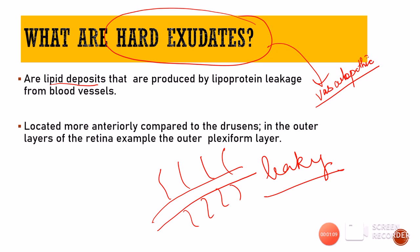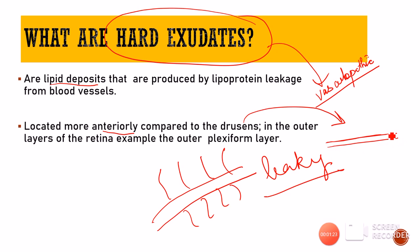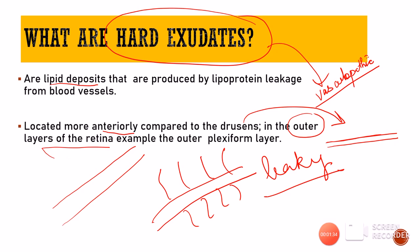Hard exudates are located more anteriorly when compared to drusen. As I mentioned in my previous video, drusen are actually located below the RPE, in between the RPE and Bruch's membrane. However, hard exudates are intra-retinal — they are located within the layers of the retina, specifically within the outer layer, and to be more precise, in the outer plexiform layer.